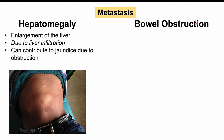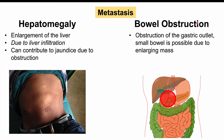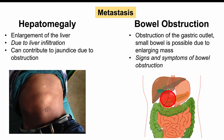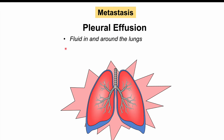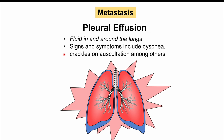We can also see bowel obstruction in gastric cancer, either due to obstruction of the gastric outlet blocking passage through the stomach, or compression of the small bowel by a large mass. Signs and symptoms of bowel obstruction include obstipation, constipation, increased nausea and vomiting, and reduced bowel sounds. Due to metastases, pleural effusion — fluid in and around the lungs — can also occur, leading to dyspnea or shortness of breath and crackles on auscultation.